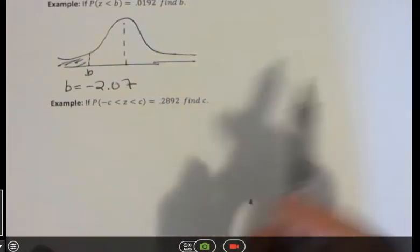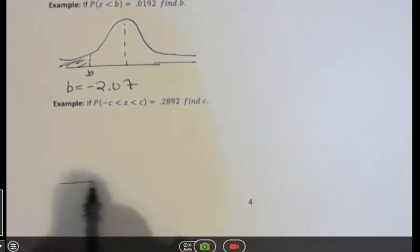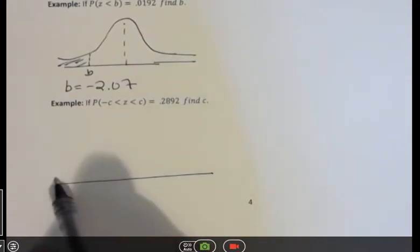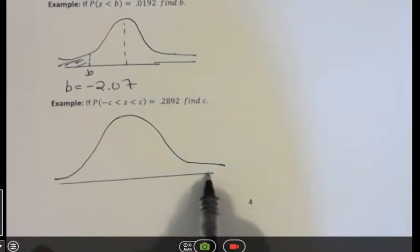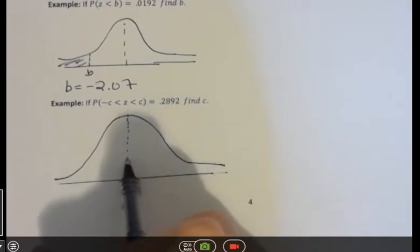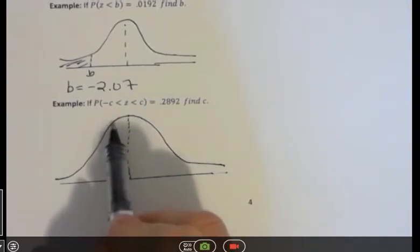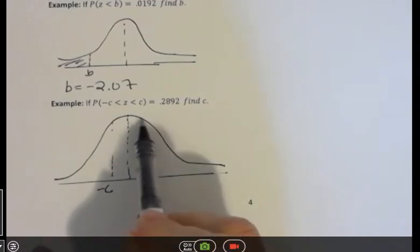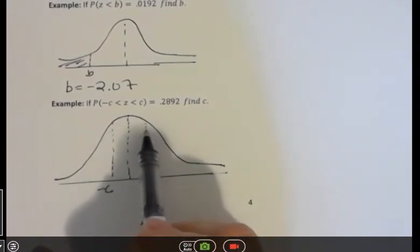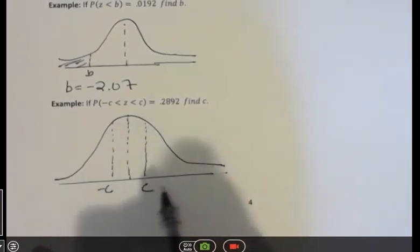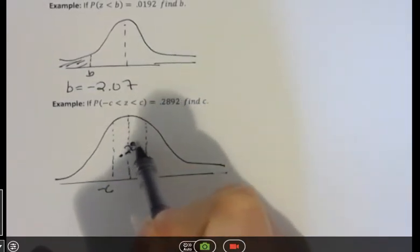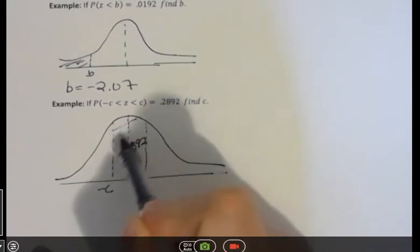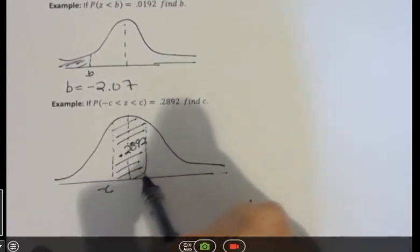So in this particular problem, it's a little more complicated because we're given that the z-score... we're going from negative C to positive C, and the area between those two z-scores is 0.2892. I should say the area between those two z-scores, not areas. So what I want to figure out is what is C.